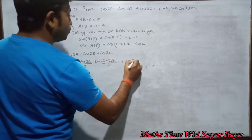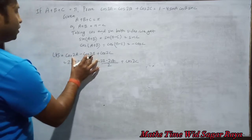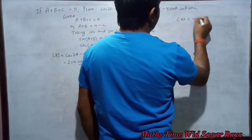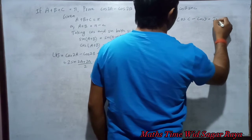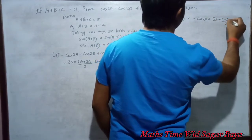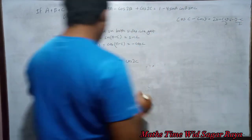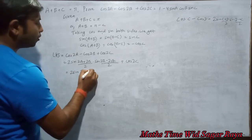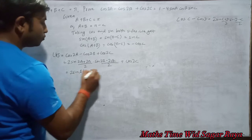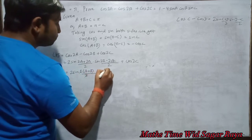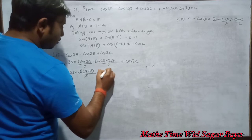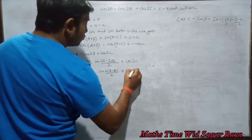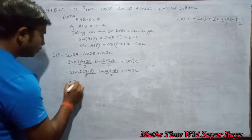The formula for cos C minus cos D is 2 sin((C+D)/2) · sin((D-C)/2). Applying this, taking 2 common, we get 2 sin(A+B) · sin(B-A) plus cos 2C.